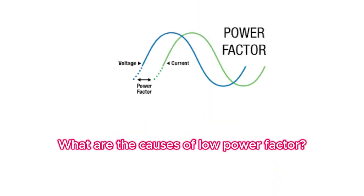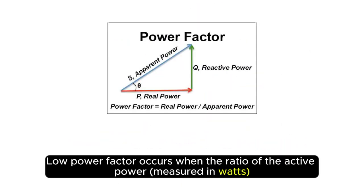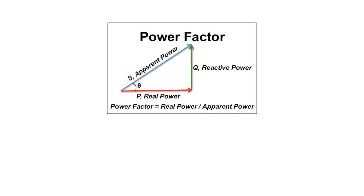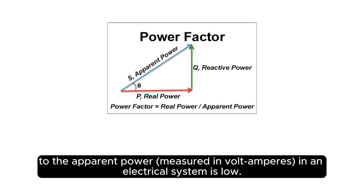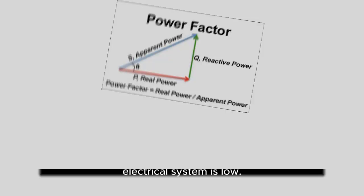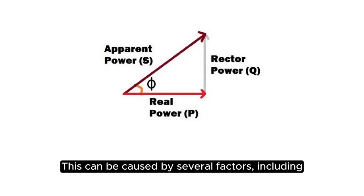What are the causes of low power factor? Low power factor occurs when the ratio of the active power measured in watts to the apparent power measured in volt-amperes in an electrical system is low. This can be caused by several factors.